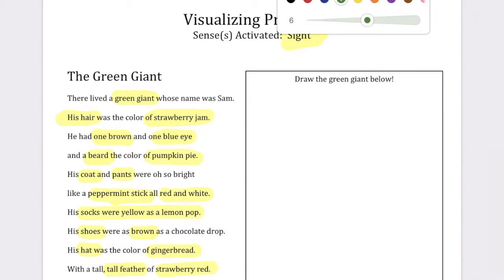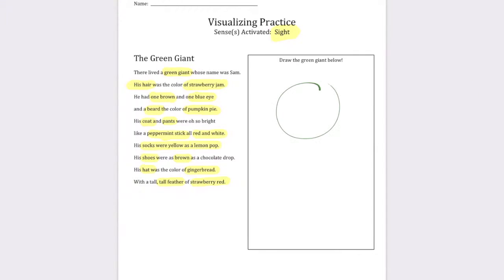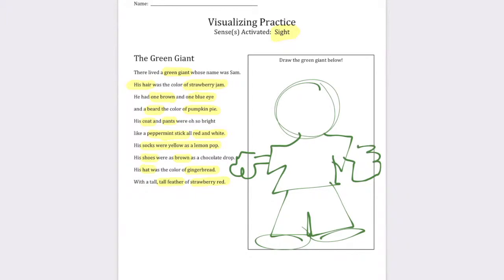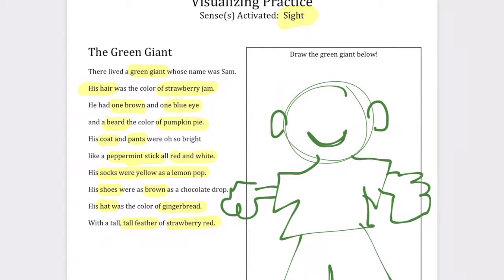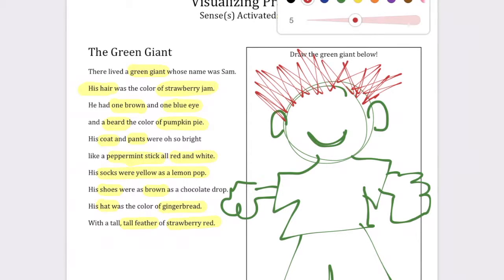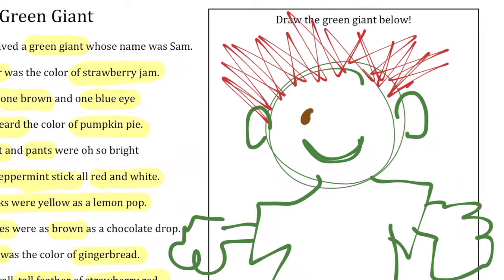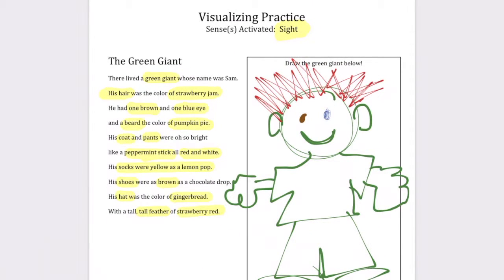Okay, now I'm going to draw this giant. So I know that he is green and he is tall. All right, so here we go. He's got some green hands. All right, he's going to be smiling and he has big green ears. All right, so green giant. His hair is the color of strawberry jam. Strawberry jam is red, so here goes the hair. It's got spiky hair. Okay, one brown eye and one blue eye.